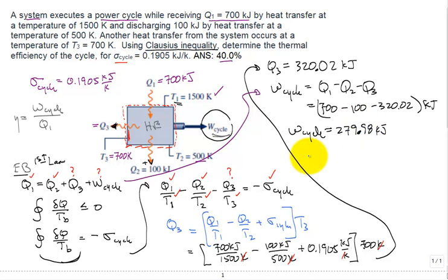Now we can return to our efficiency equation. That's 279.98 divided by our Q_in of 700. Both have units of kilojoules, so the units cancel, and the cycle thermal efficiency is right at 40%. Well, I hope you found that helpful. We're done with this problem. Thank you.